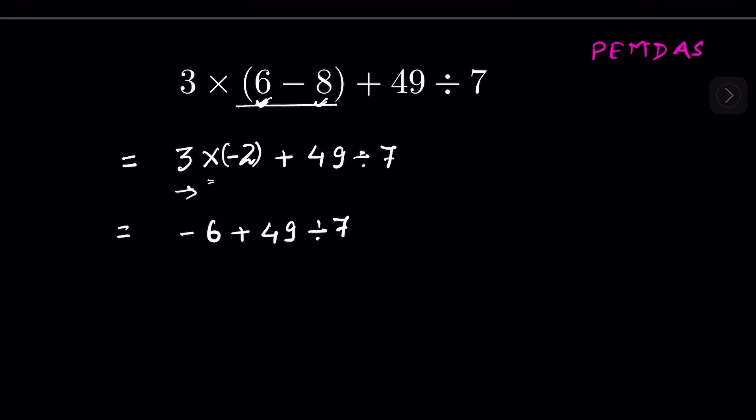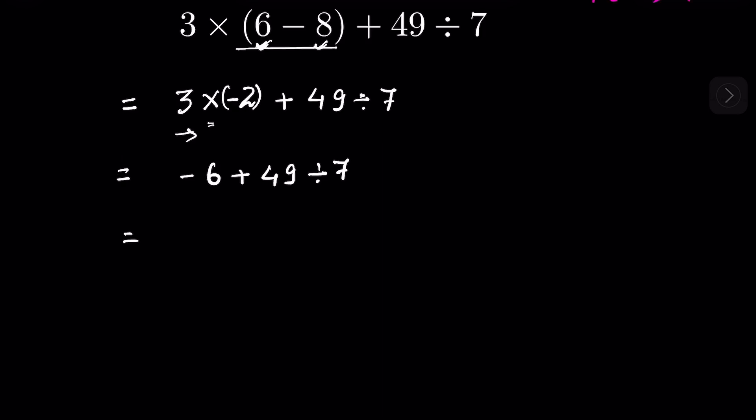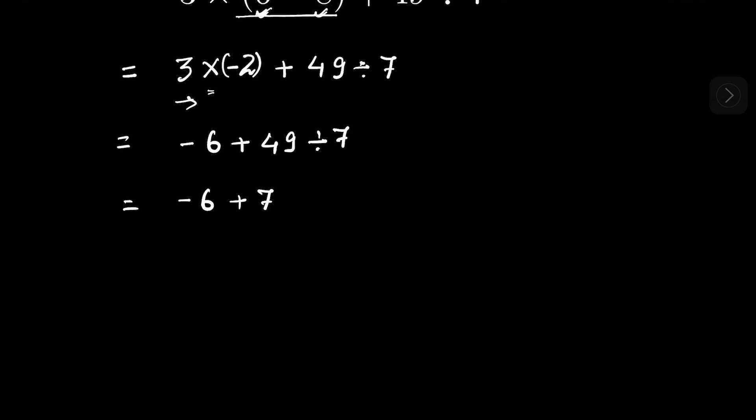Now you can solve the division because before addition we have to solve division. 49 divided by 7 will be 7. Now minus 6 plus 7 will be positive 1, because 7 is bigger than 6. So the answer is 1. Like and subscribe, thanks for watching.